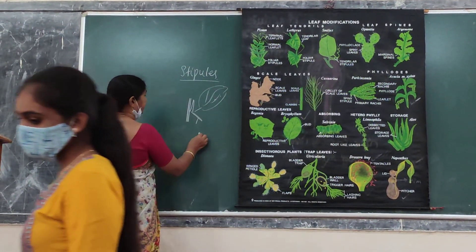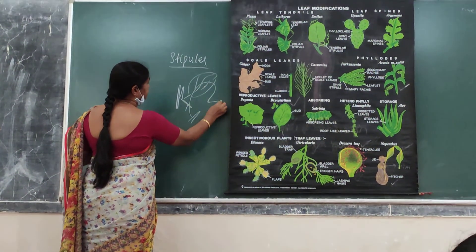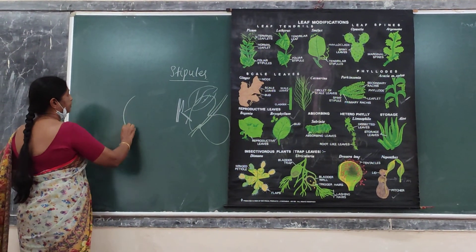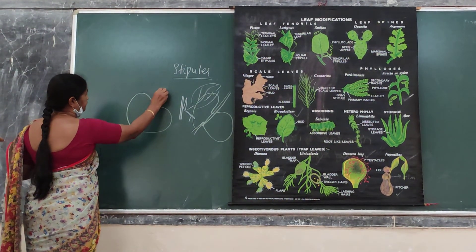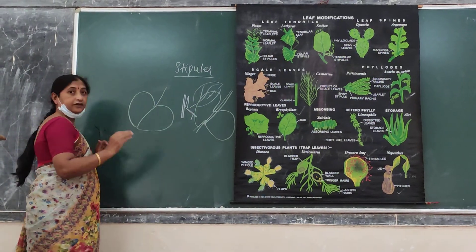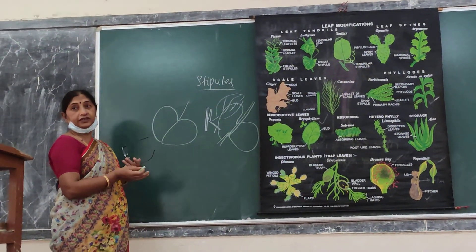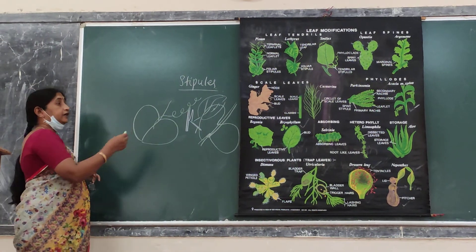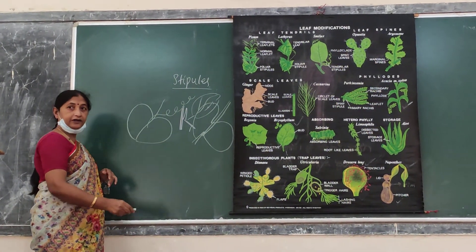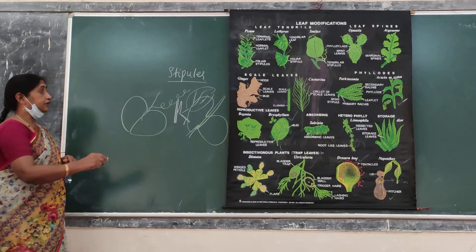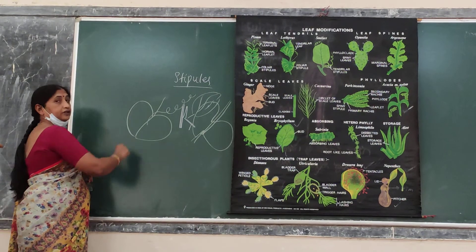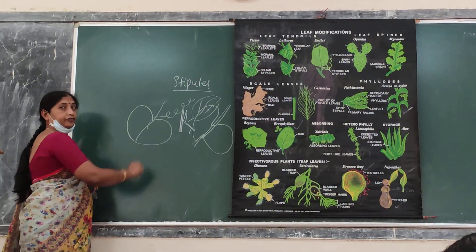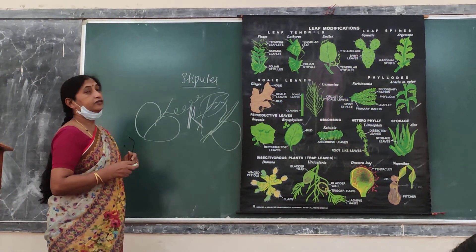Stipules get modified into more leaf-like structures. Have you observed the pea plant? At the base of it, you will find a leafy structure and then a terminal structure. Here, the leaf is modified into a tendril, and the stipules become foliaceous — large leaf-like structures to perform the function of the leaf. So stipules are called foliaceous.